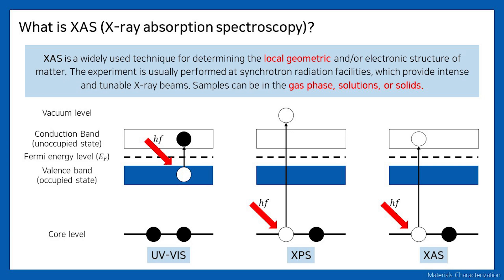XAS has the advantage of sensitivity and can be performed with various sample states: gas, liquid, and solid. Let's simply compare to other analysis principles. First, UV-Vis uses UV and visible light source for absorption spectrum. Absorption occurs by electron excitation from valence band to conduction band.